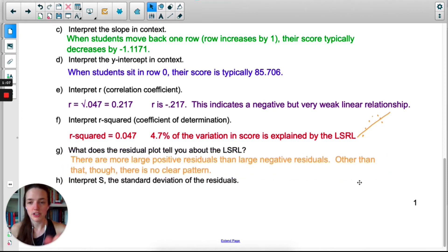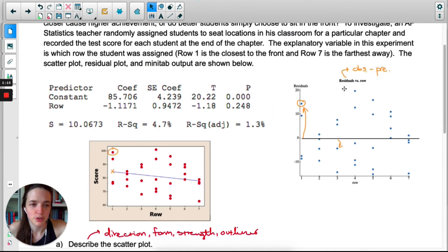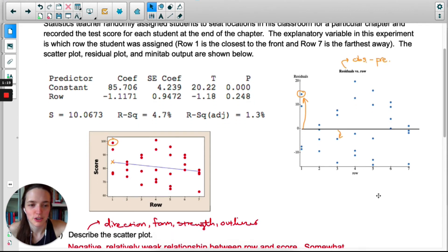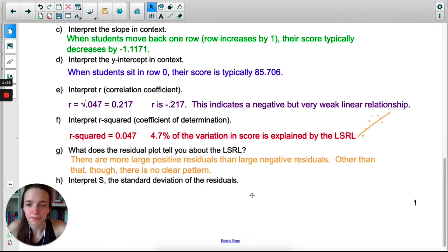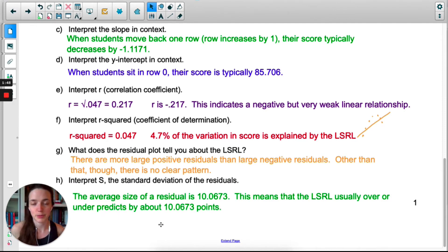The residual plot we already mentioned. You want to look for no clear pattern. I did note that there are more large residuals in the positive side than the negative side, so that's one thing that we should be a little kind of skeptical of. There's many students that outperformed. Other than that, there's no clear pattern. What you want to make sure you don't have is like a horn shape, something where it's very small on one side, all the residuals are close to zero, and then they're all very large on the other side. You don't want that. You want no pattern. If there's no pattern in the residual plot, that means the line is pretty good at predicting. And then last but not least, s, which is the standard deviation of the residuals, tells us the average size of a residual. So typically this least squares regression line over or under predicts by about 10.0673 points.